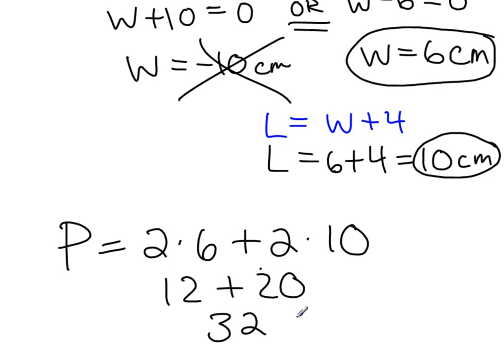And perimeter's units are centimeters, just the singular unit. Area is centimeter squared. So this is our final answer and we are done. I'm going to end the video and do a couple separate more word problems. So tune into other word problems if you want to.